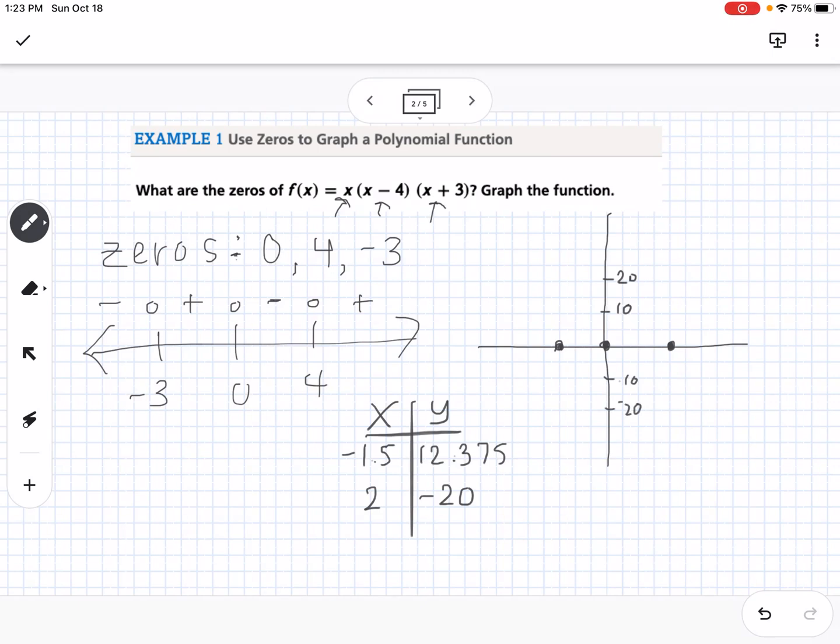So we know that between, so at negative 1.5, we're at 12, so we're like right about there. And then at 2, we're at negative 20, so we're down there. So then you can kind of sketch in what the picture of your graph is going to look like based off of your positive-negative chart, your zeros, and then plugging in to find the local mins and maxes, the local extrema. So that's example 1.